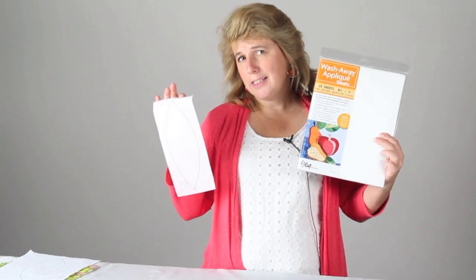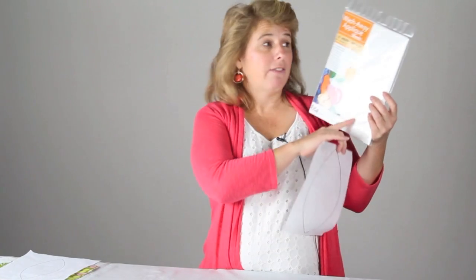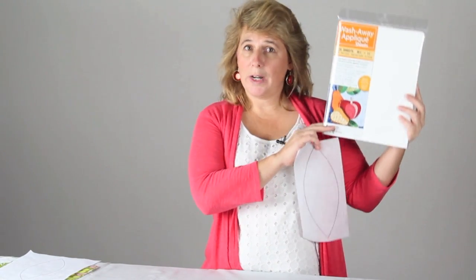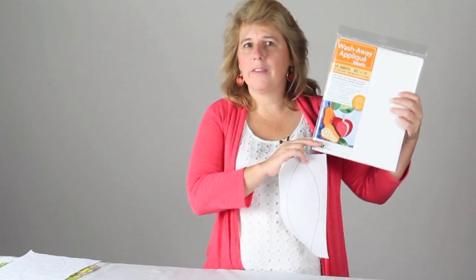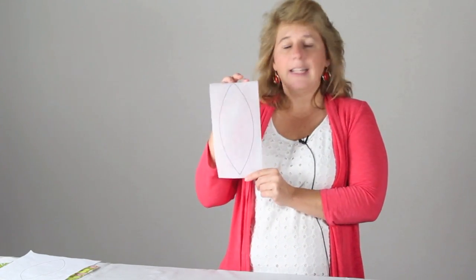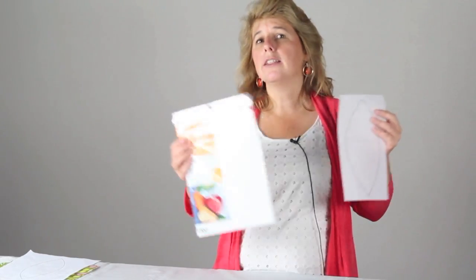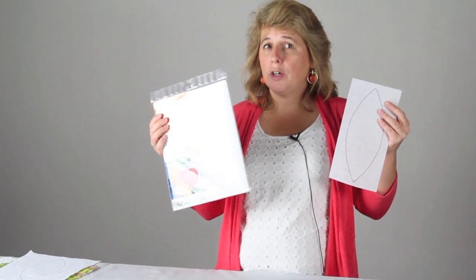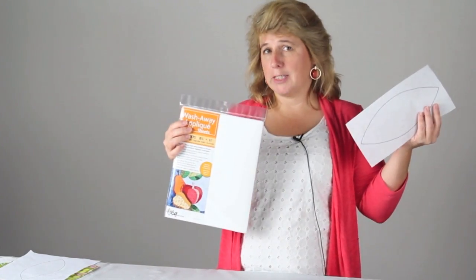Now, there's advantages and disadvantages to both. The advantage to the C&T product is that you don't have to trace all of your pieces, but it does cost a little bit more, but it might be worth it for convenience sake. The other product, the Pellon, it's a little less expensive, but you are going to have to trace your individual pieces. So what it boils down to, both products work great, but you will want to just evaluate your own need for time versus money.